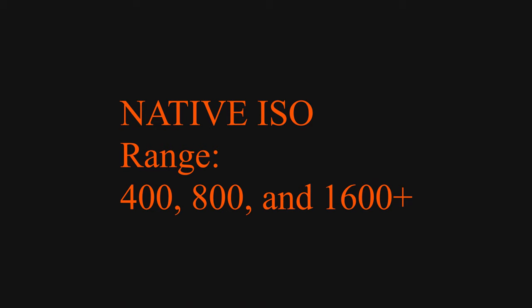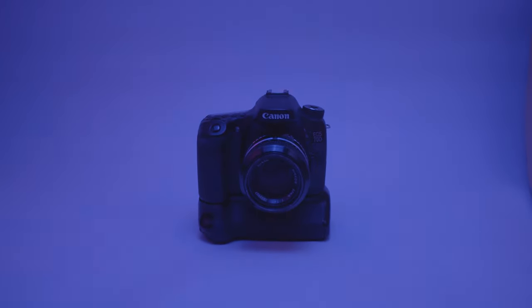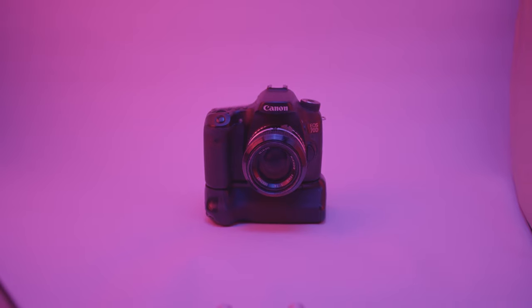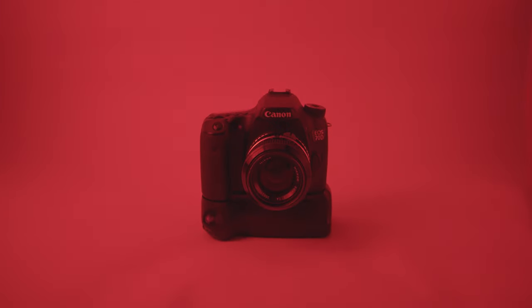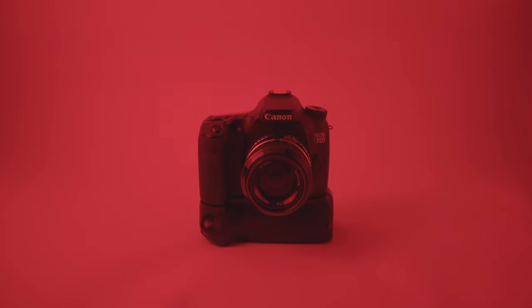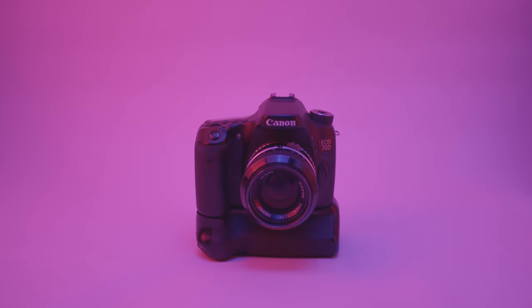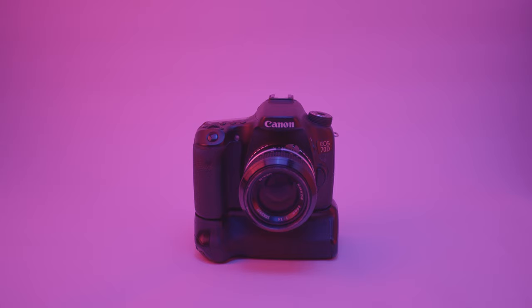For most DSLRs, specifically Canon, the native ISO is 800. For others, like Sony or even cinema cameras, it's sometimes 800 and above. I would be cautious when using ISO, because what ISO does is digitally brighten up the image. When you do that, you run the risk of adding a lot of unnecessary digital noise into your image, which can mess up your exposure.